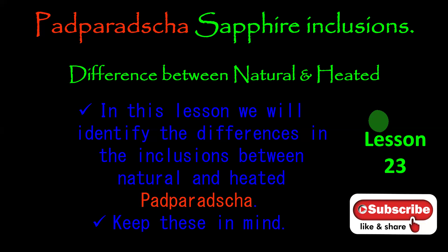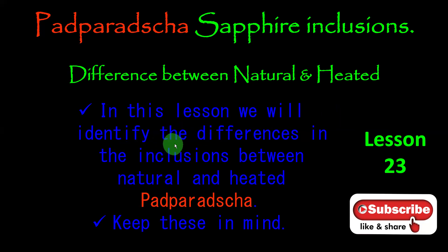Remember these inclusions. It is a simple thing — you can see the stone through the 30x, 40x, or 10x loupe and find these inclusions, and can get the decision on whether it is natural or heated. Don't depend on the lab.